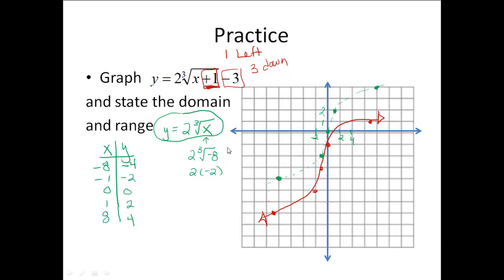I also need to state my domain and my range. My domain is my input values, and remember with cube roots I don't have any restrictions, so my domain would be all real numbers. For my range, looking at my graph, I can go as far negative as I want and as far positive as I want, so my range would also be all real numbers for this one.